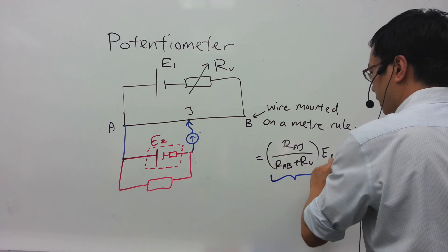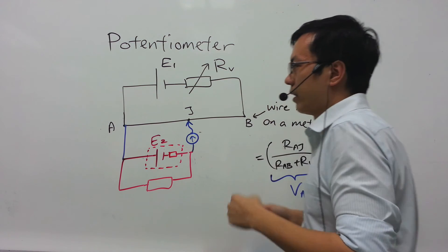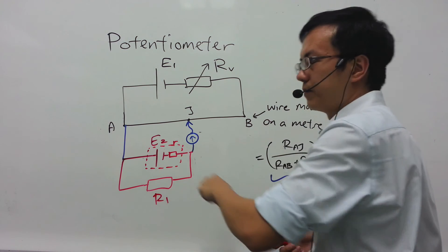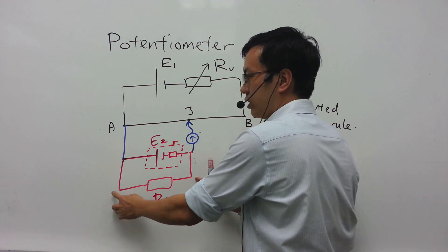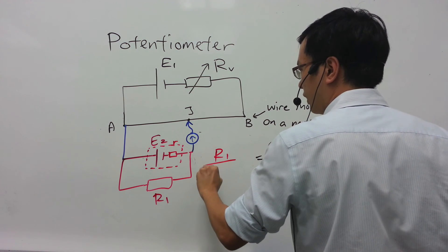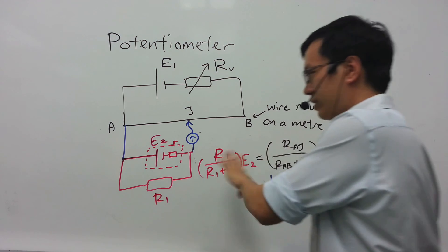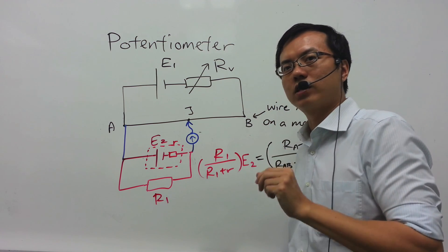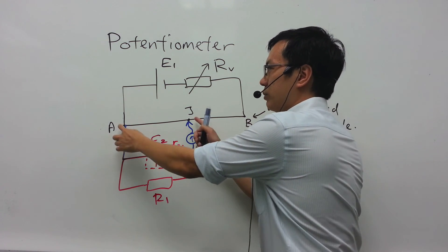The potential difference across AJ is equated to the potential difference we are trying to measure. Let's call this R1, and small r is the internal resistance of the secondary cell. The potential difference that AJ is going to measure is the terminal potential difference across E2, or rather the potential difference across R1. That can be determined by taking the ratio of R1 to the total resistance within the secondary circuit, multiplied by E2. Once we have this basic setup right, we can change the secondary circuit into anything. As long as we are able to apply the potential divider rule, we should be able to form an equation equating the potential difference we are trying to measure to the potential difference across AJ.